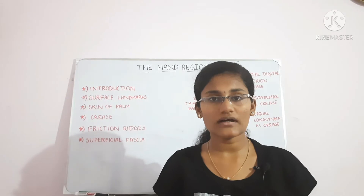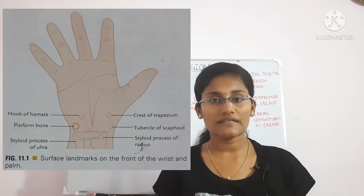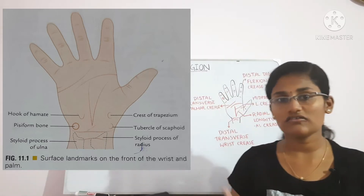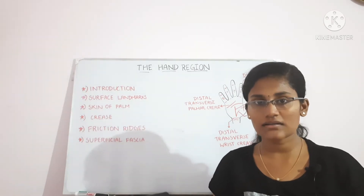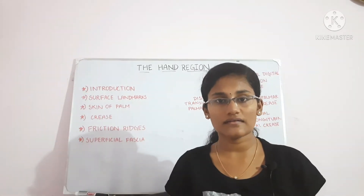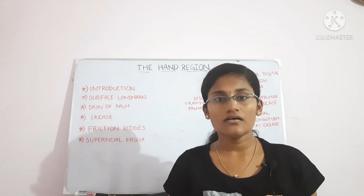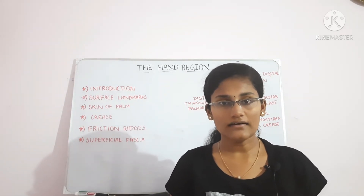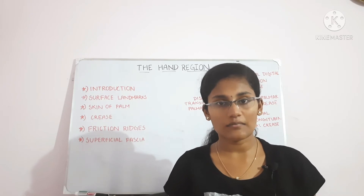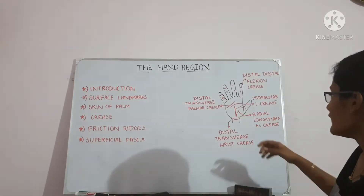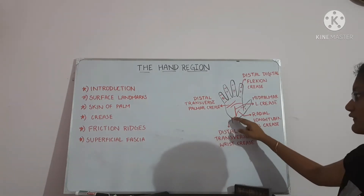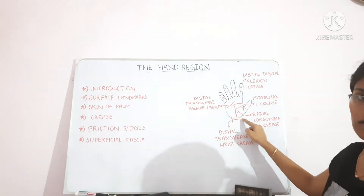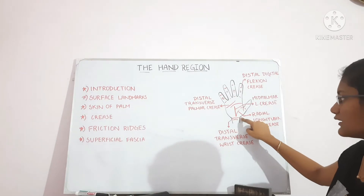The hand has four surface landmarks: the tubercle of scaphoid, tubercle of trapezium, pisiform, and hook of hamate. The tubercle of trapezium can only be felt by deep palpation. The tubercle of scaphoid is present on the lateral side, at the base of the thenar eminence, and lateral to the distal transverse wrist crease — that is, on the thumb side.